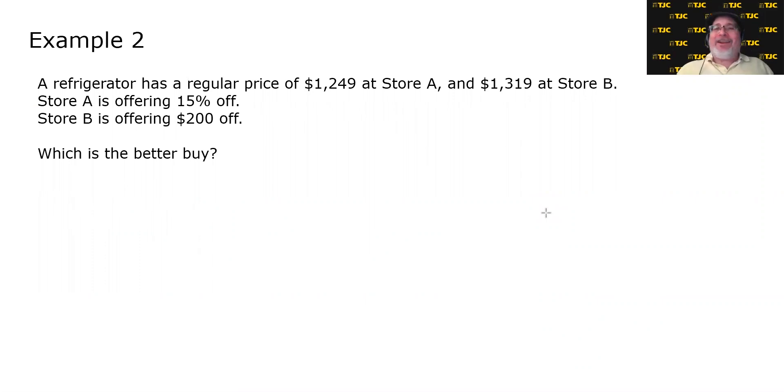All right, so this isn't that uncommon of a scenario, especially if you're a smart shopper and do your homework, because with all the information you can find online, you can really find discounts, and you may have to actually figure out which is the better buy. So we're going to start with store A. And let's think about what it is we need to do. For store A, the regular price is $1,249, but it's 15% off. So we actually need to do two things. We need to figure out how much we're going to take off and then subtract it.